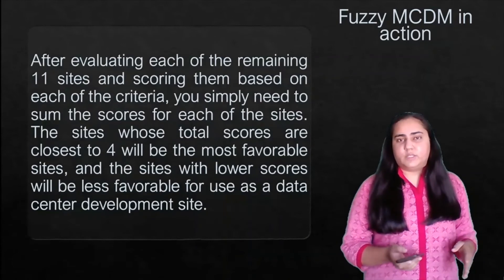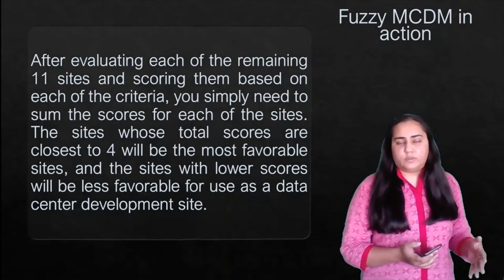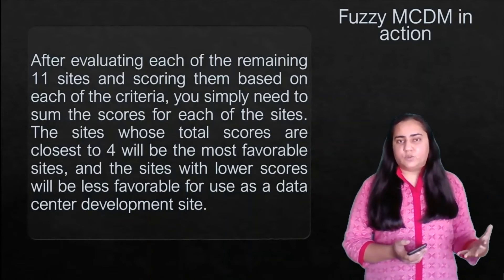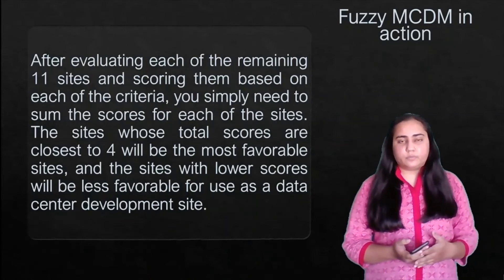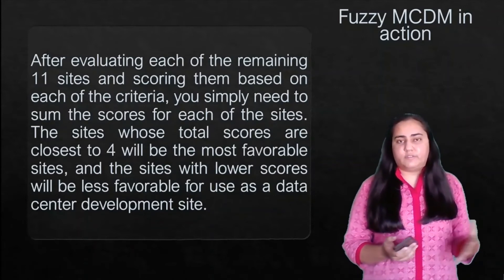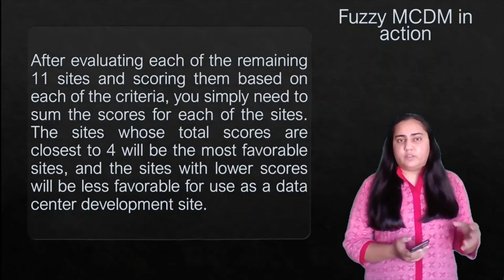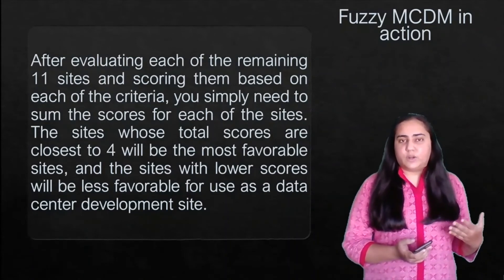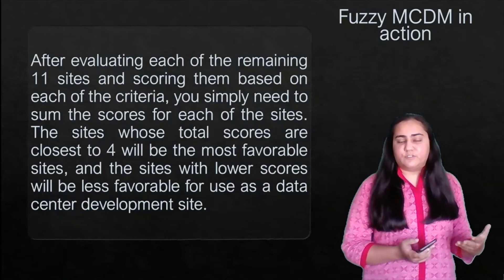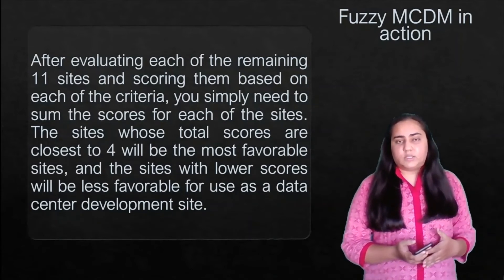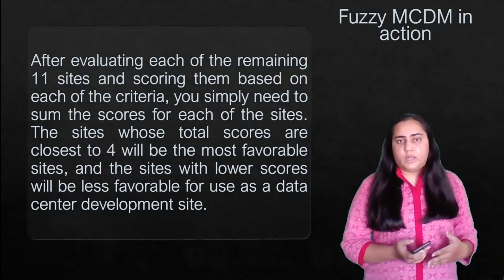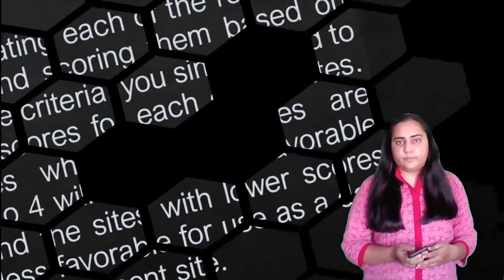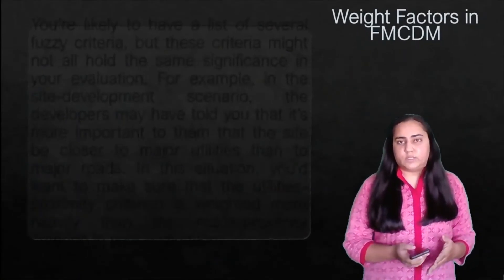Once you've evaluated all 11 sites and scored them based on the four criteria, you sum the scores for each site. The sites whose total scores are closest to four will be the most favorable for data center development, and sites with lower scores will be less favorable. This helps narrow down your decision.